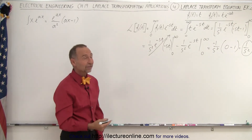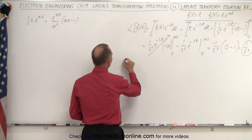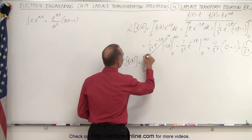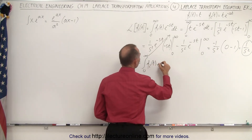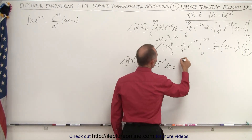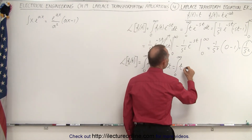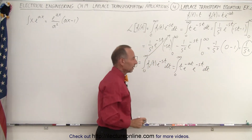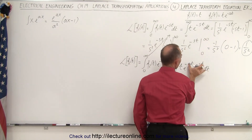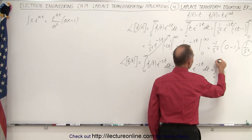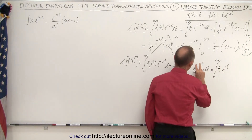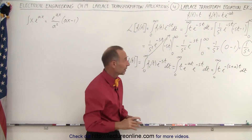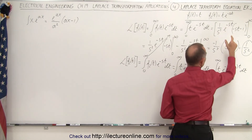What happens when we have t multiplied times e to the minus at? The Laplace transform of the second function is the integral from zero to infinity of t e to the minus at times e to the minus st dt. We combine those two exponents, giving the integral from zero to infinity of t times e to the minus s plus a times t dt. We now have the exact same integral, but instead of just s, we have s plus a everywhere.